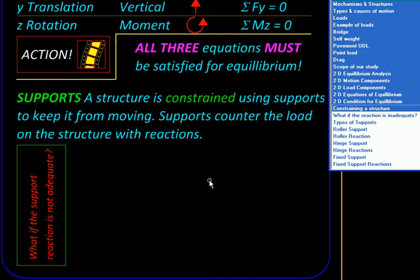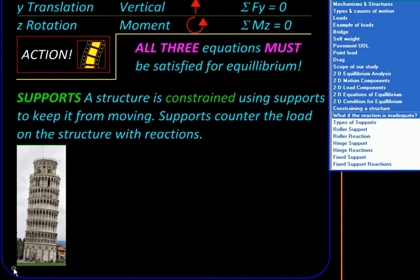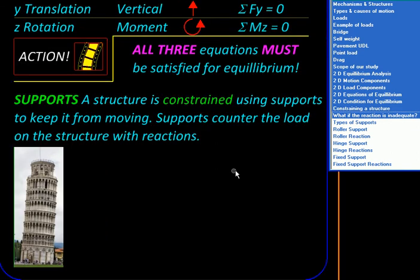And the example of that is very famous. We all know about it. Here it is. So what happened here? Here, the support, the ground, was not strong enough. So, on the right, it was weaker than on the left. It couldn't offer enough reaction. And the whole thing tilted to the right in this picture.